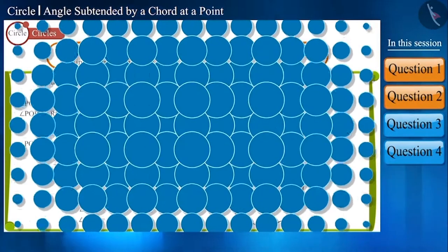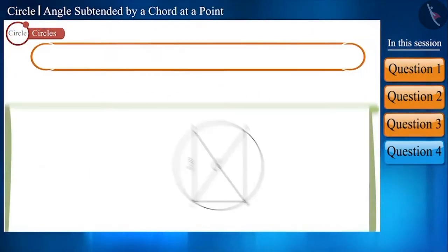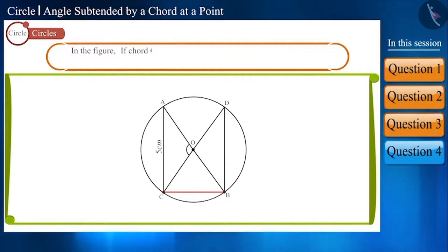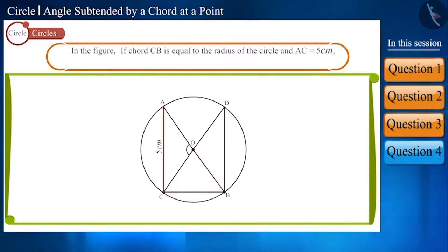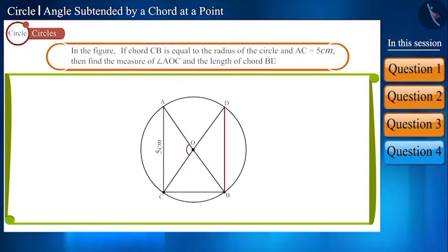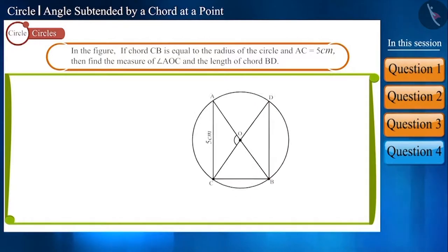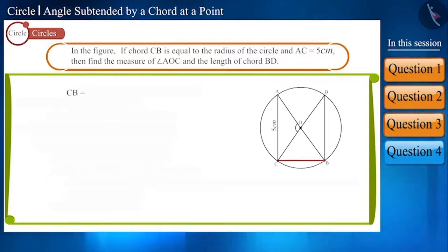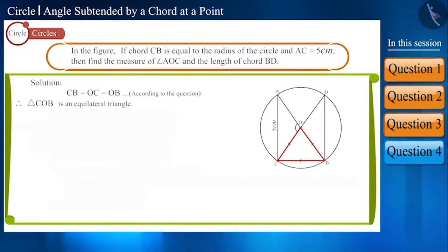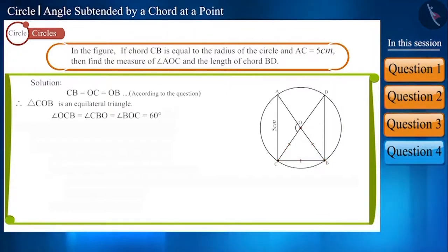Let's move on and solve another question. In the given figure, chord CB is equal to the radius of the circle, and the length of chord AC is 5 cm. Find the measure of angle AOC and the length of chord BD. We are given that chord CB equals the radius, so triangle COB will be an equilateral triangle whose three angles measure 60 degrees. In this way, we get the measure of angle COB as 60 degrees.